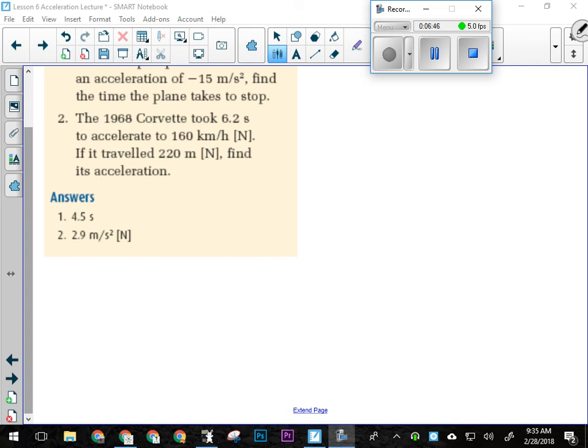Let's look at number two here. So the 1968 Corvette took 6.2 seconds to accelerate to 160 kilometers per hour. Incidentally, that's 100 miles an hour. So that's fast.